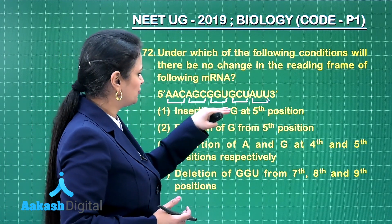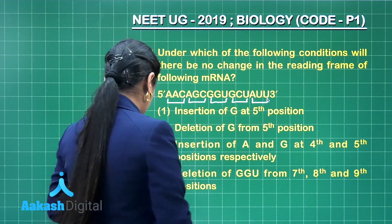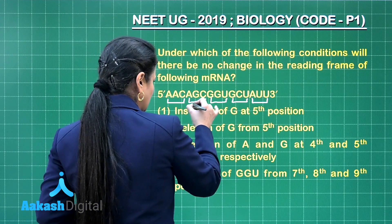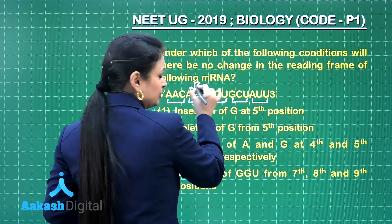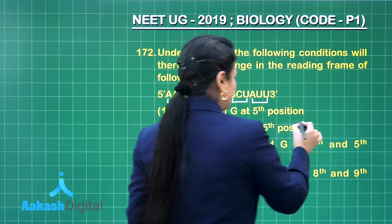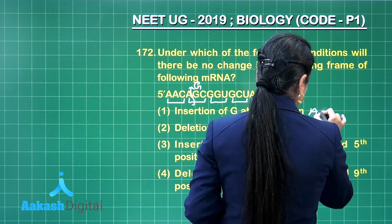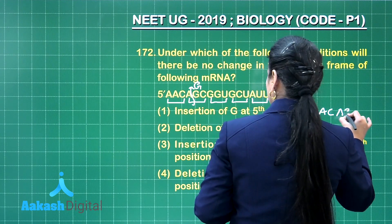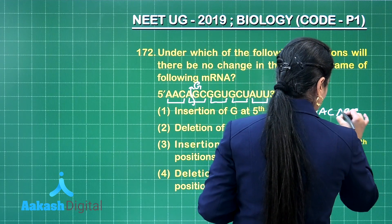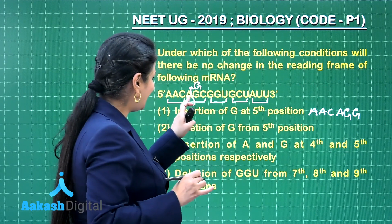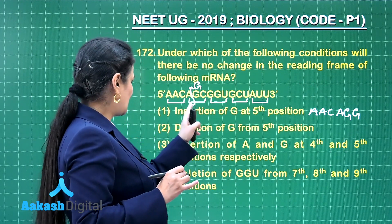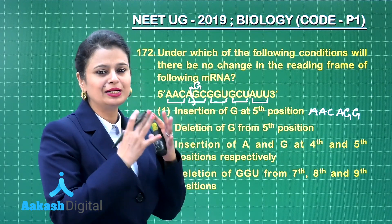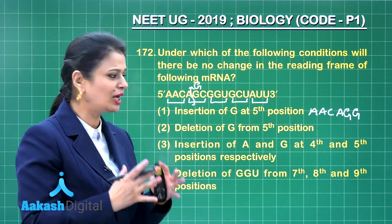First option: insertion of G at the fifth position. If G is inserted at the fifth position, the first codon remains AAC. However, the second codon is now AGG — not AGC as before. Because there is one additional nitrogenous base, the reading frame has been changed.